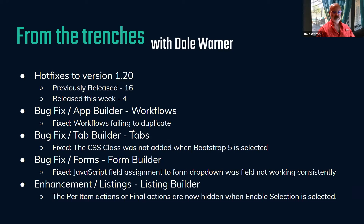Someone reported in our new Bootstrap 5 tabs module that applying a certain CSS class wasn't working — it wasn't adding the class, so that's fixed. In form builder, JavaScript field assignment to a drop-down field wasn't working, but it's fixed. Also, per-item actions and final actions are now correctly triggered when enabling selection on a listing — instead of showing three sections, those extra areas are hidden when you're doing a single item button, to avoid confusion.